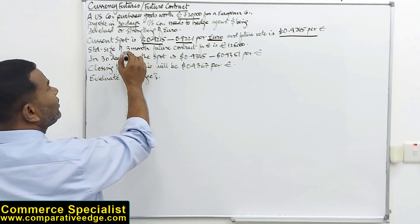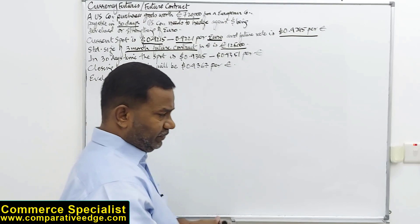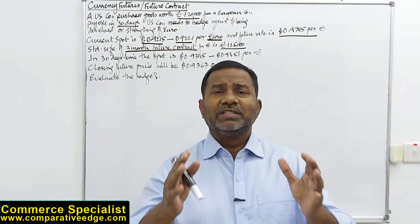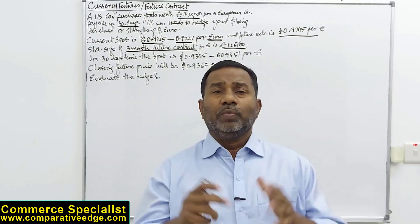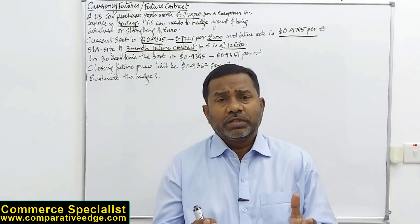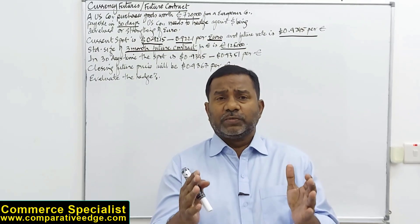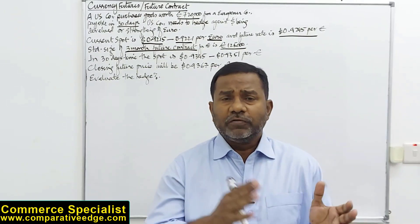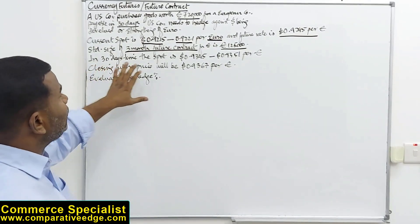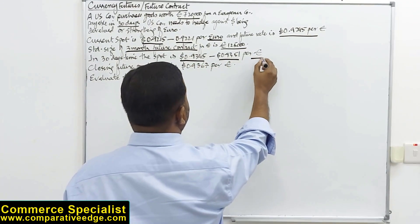The standard size of a three-month futures contract is 125,000. A futures contract is a standardized contract to buy and sell a fixed amount of currency at a fixed future date. Currency futures are exchange-traded — they are not settled over the counter. The underlying transaction takes place at the spot rate and the difference between the spot and future date is settled between the two parties. In 30 days, the spot rate is expected to be between 0.9345 and 0.9351 for one euro.